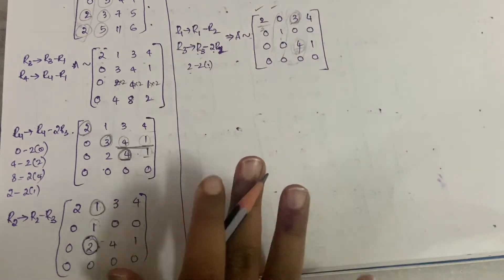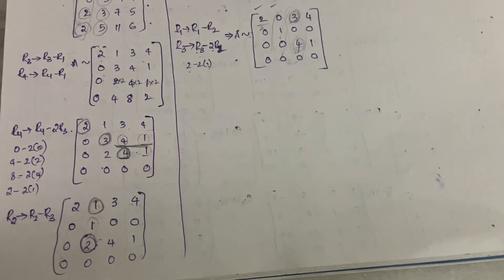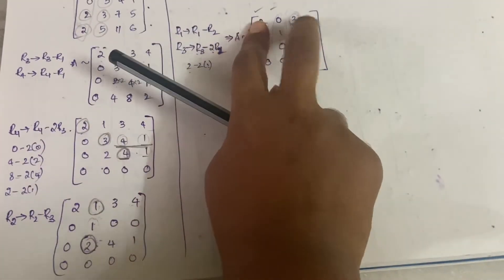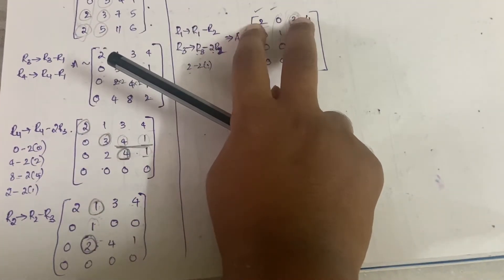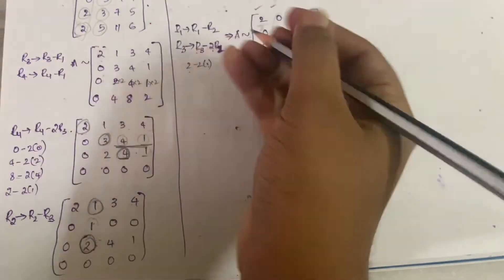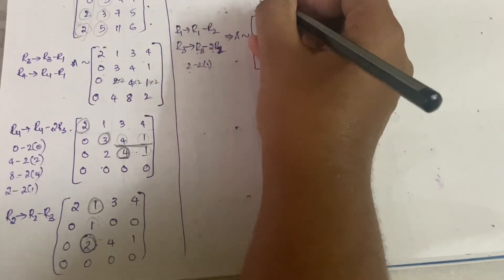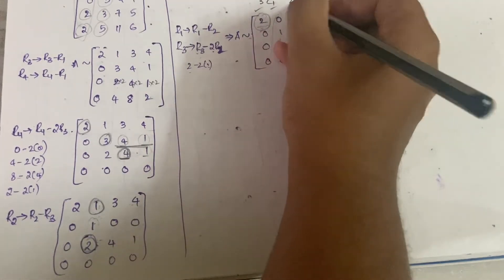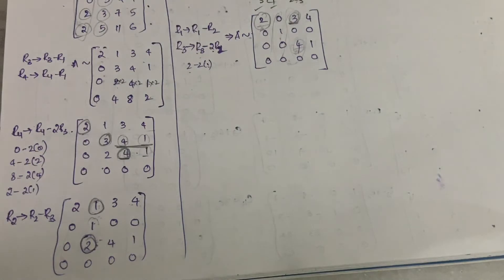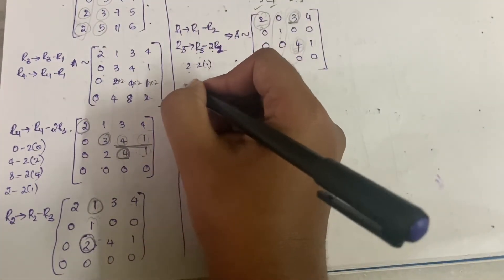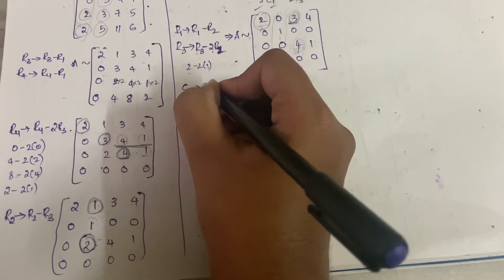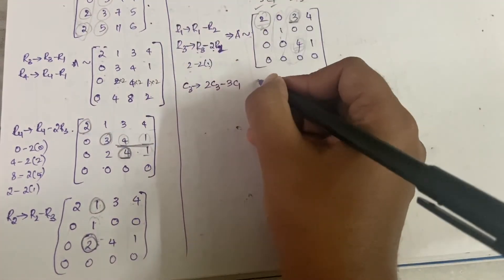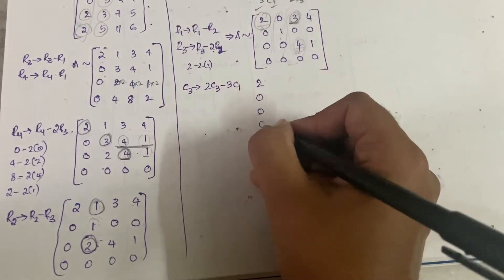We have 2 and 3 available, so instead of finding the LCM, we can simply cross-multiply. We do 3·C1 and 2·C3 — cross multiplication — so C3 becomes 2·C3 minus 3·C1.